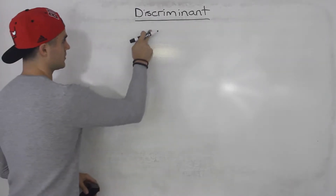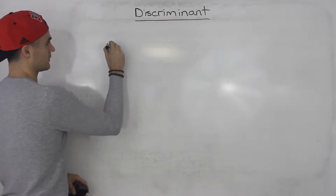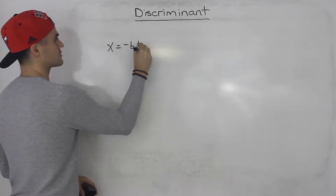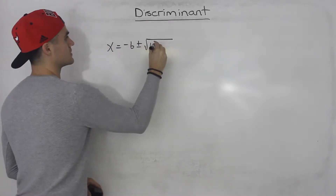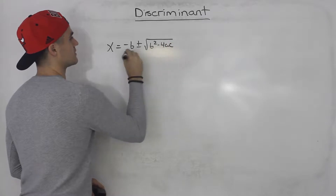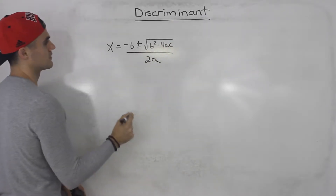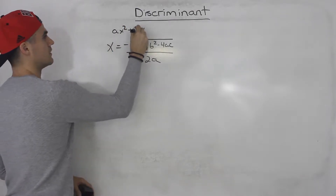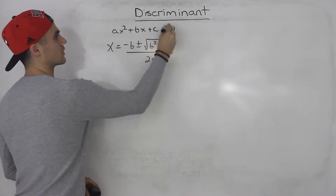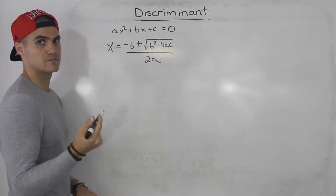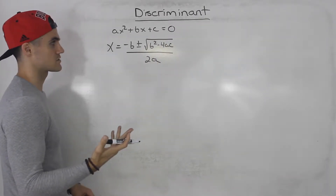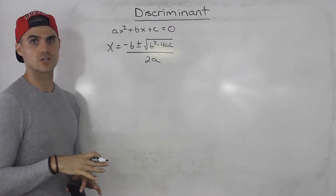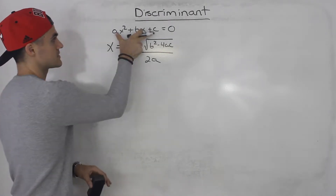The discriminant comes from the quadratic formula, and the quadratic formula is x equals negative b plus or minus square root of b squared minus 4ac, all over 2a. This formula gives us the solution to any quadratic equation. It also gives us the x-intercepts — the solution to a quadratic equation is the same as the zeros or the x-intercepts of that quadratic function.